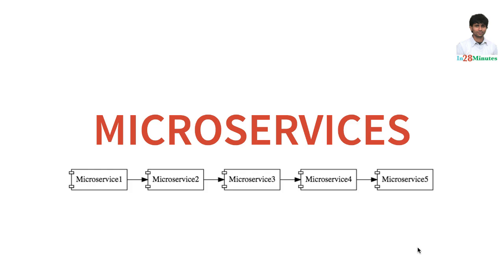Whenever we talk about microservices architectures, you will not be having a single microservice. So instead of a large application, we will be having multiple smaller microservices — this might be 10, 100, 200, or 300 based on the size of the enterprise. And the interesting part is each of these microservices would have their own configuration: which database to talk to, which applications to talk to, how do you talk to other applications. All this configuration would be different for each microservice between all the environments.